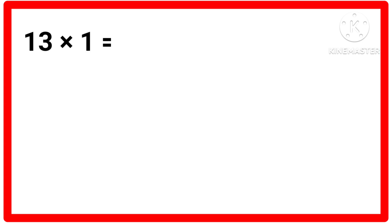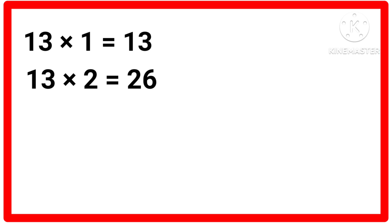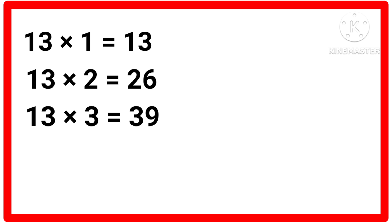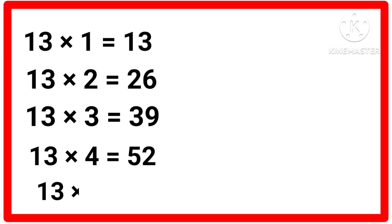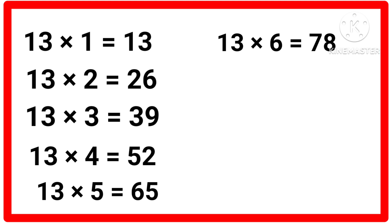Table of 13. 13 ones are 13, 13 twos are 26, 13 threes are 39, 13 fours are 52, 13 fives are 65.